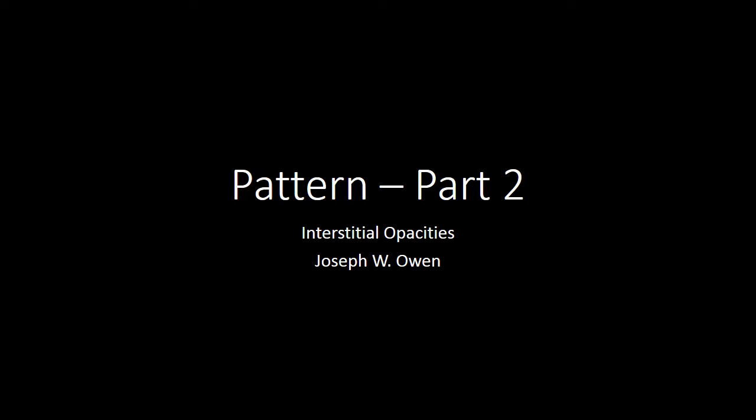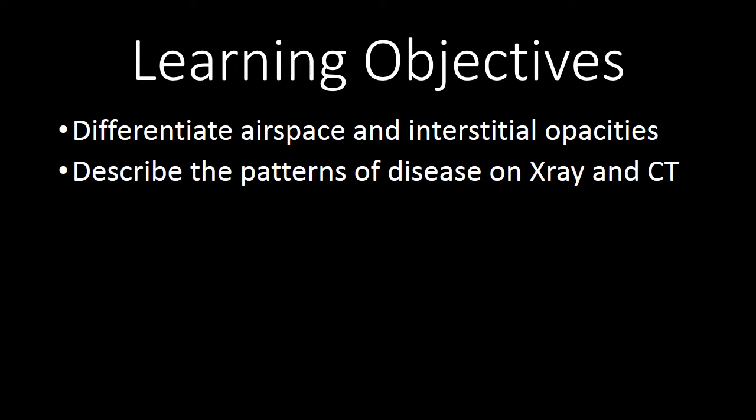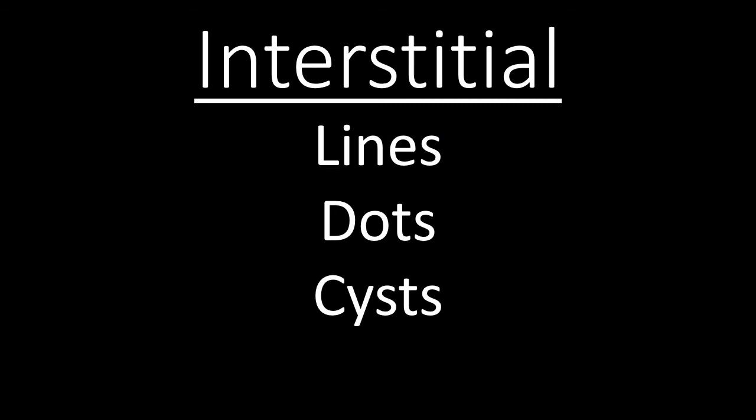In this screencast, we are going to discuss the patterns of interstitial opacities. At the end of this screencast, in conjunction with the prior screencast on patterns, you should be able to differentiate airspace opacities from interstitial opacities, and you should start to be able to use basic terminology to describe the patterns of disease on chest x-ray and on CT.